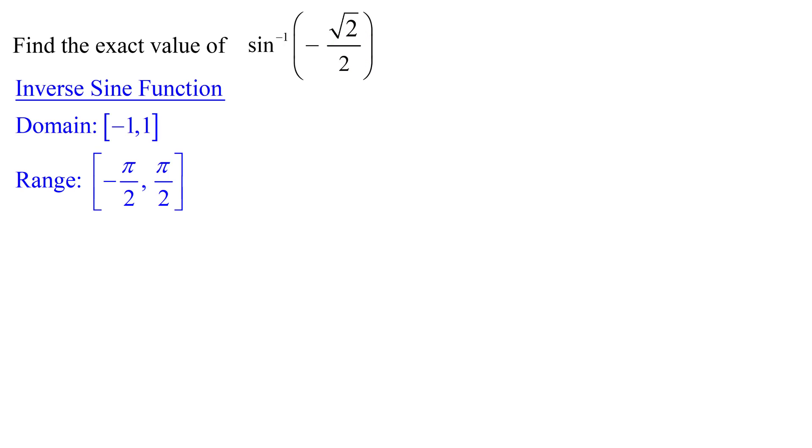So quickly reviewing, for the inverse sine function, the input values are the domain of real numbers between negative 1 and 1, including the endpoints, and the output values, or the range, are angles in the interval negative pi over 2 to pi over 2, again including the endpoints.